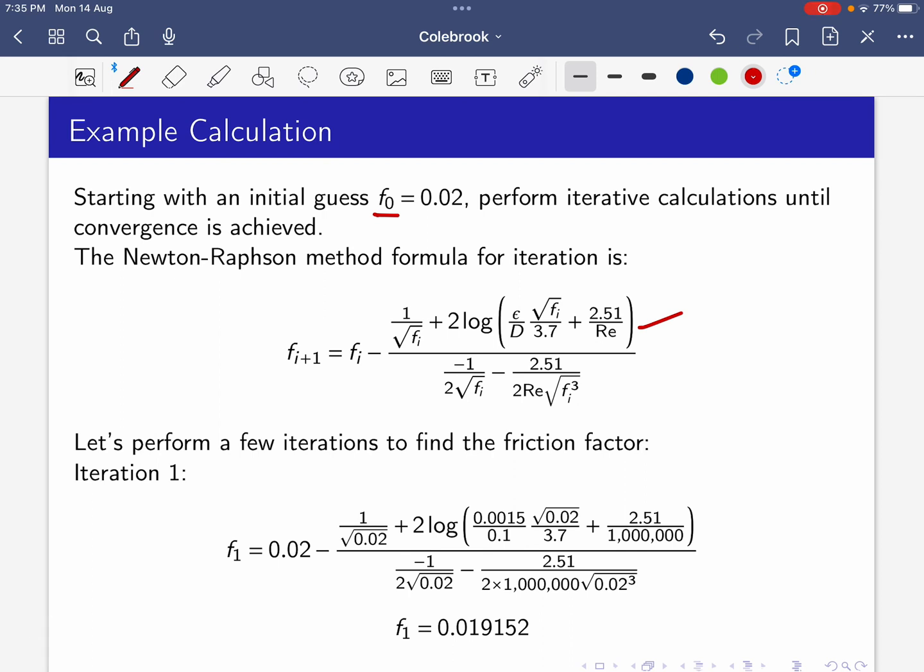Performing iteration one: f₁ = f₀ minus the ratio. f₀ is 0.02. Plugging in all values with the already calculated Reynolds number, epsilon value, and diameter, we get f₁ = 0.019152.